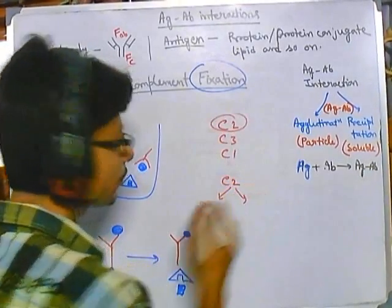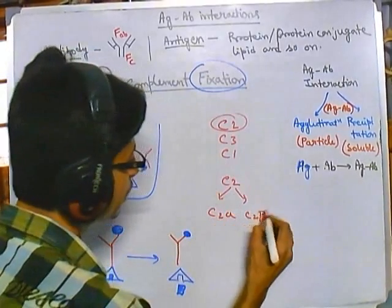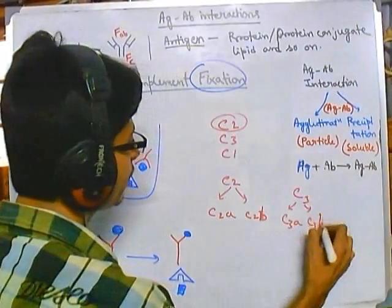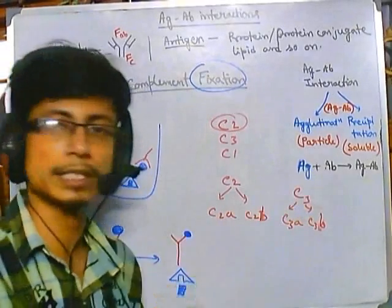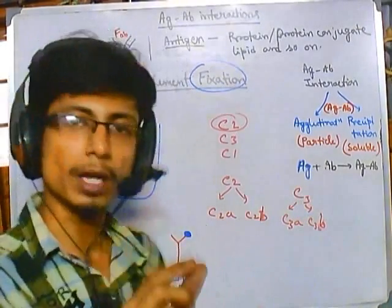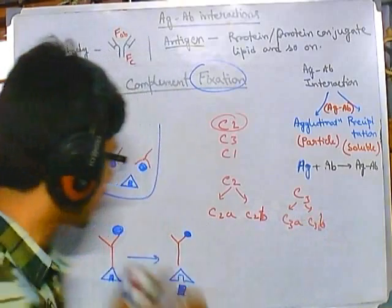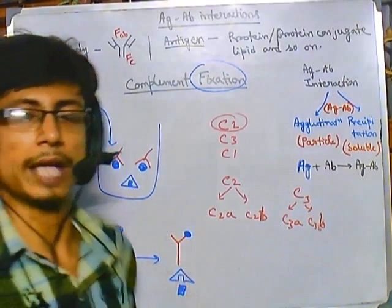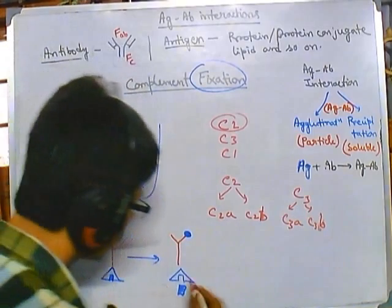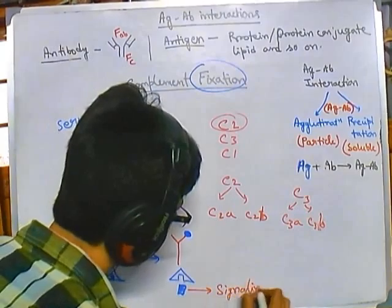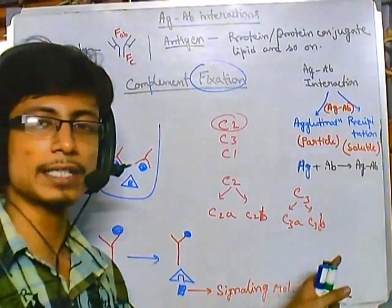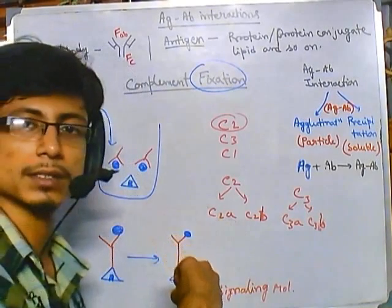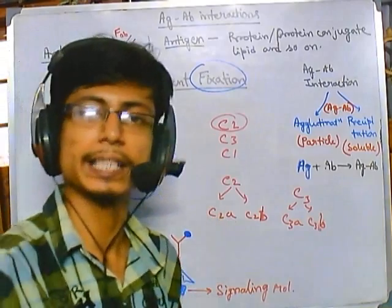There are many complement proteins like C1, C2, C3, and so on. For example, C2 can be degraded into C2a and C2b; C3 into C3a and C3b. When degraded, we get two fragments: a smaller and a larger one. The large fragment stays attached to the antigen portion, while the small fragment acts as a signaling molecule, attracting macrophages to engulf and destroy the antigen.